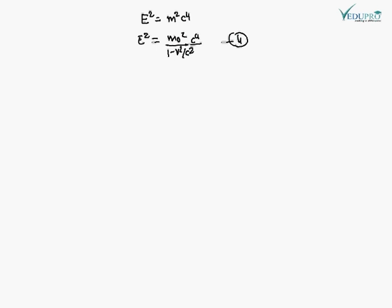Substituting: E² = m₀²c⁴ / (1 - v²/c²). Putting in the value of v² = p²c² / (m₀²c² + p²), and cancelling c² terms, we get E² = m₀²c⁴ × (m₀²c² + p²) / (m₀²c² + p² - p²).